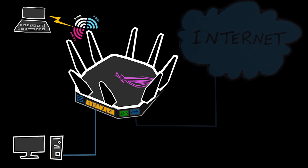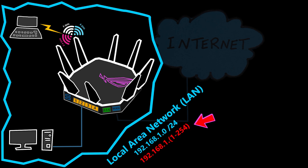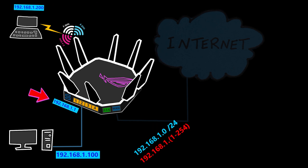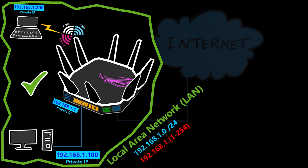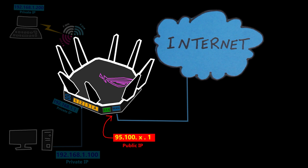Now let's take a closer look at this network. The network address is 192.168.1.0/24, meaning all devices in this network will have IP addresses in this range, including the wireless router itself. These IP addresses are private addresses, valid only on this local area network — not on the internet. That's why the router's WAN interface has a public IP address, so it can communicate with the internet.